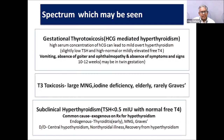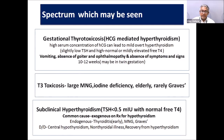Subclinical hyperthyroidism is commonly encountered, often on treatment for hypothyroidism or in early thyroiditis. Differentials include central hypothyroidism and sick euthyroid syndrome. Although subclinical hyperthyroidism usually doesn't need treatment, it has two important impacts: increased cardiovascular morbidity in postmenopausal women, and osteoporosis.